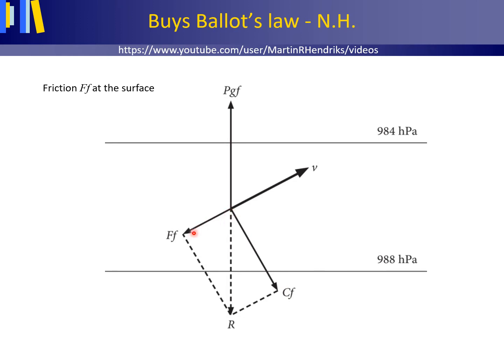Friction opposes the air movement, so the friction force acts in the opposite direction to the air movement. The resultant of the Coriolis force (CF) and the friction force (FF) is R, as shown here. R is in equilibrium with the pressure gradient force (PGF).